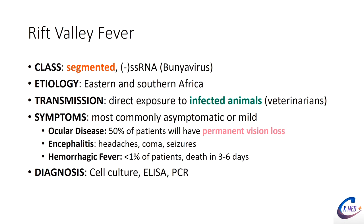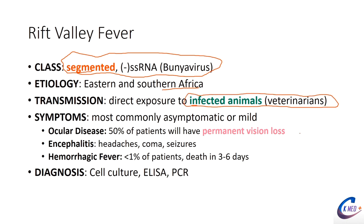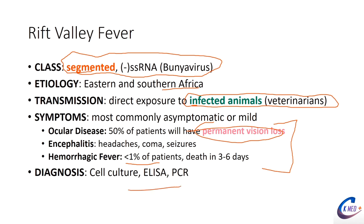Rift Valley fever is a segmented bunyavirus found in Africa and associated with infected animals — veterinarians are those who usually pick it up. It's usually asymptomatic but can involve the eyes, cause encephalitis, or progress to hemorrhagic fever in a small proportion of patients. It's one of the common causes of viral vision loss — permanent vision loss is a notable feature. Diagnosis is via ELISA and PCR.